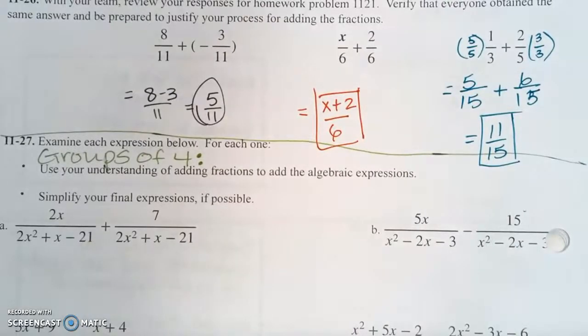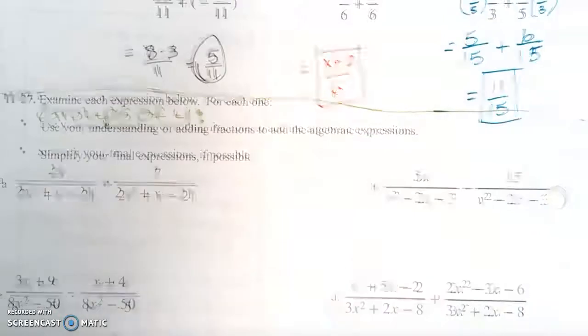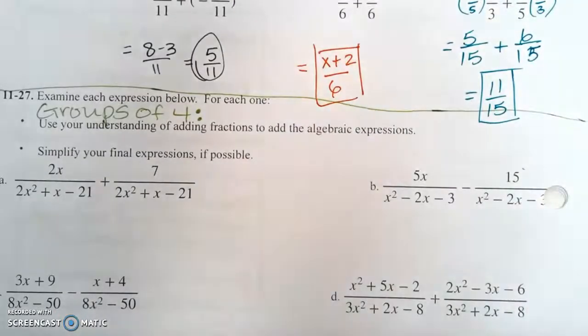We're going to come back in a minute and in your group of four you guys are going to do A, B, C, and D together. It looks like they're all common denominators already, so that should be easy.